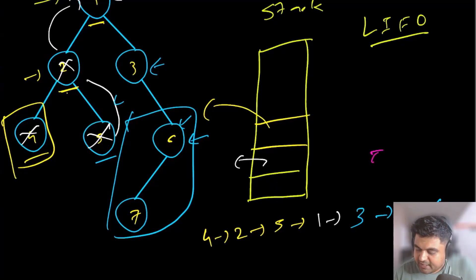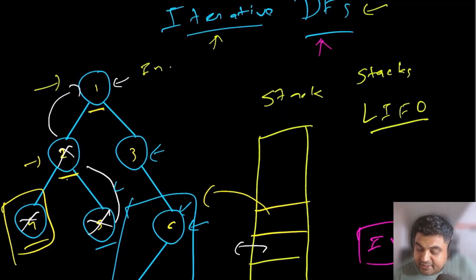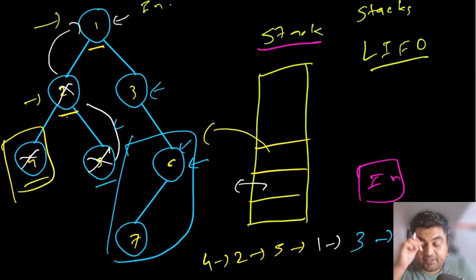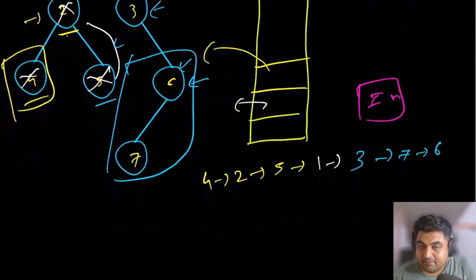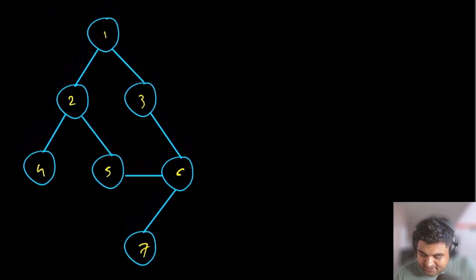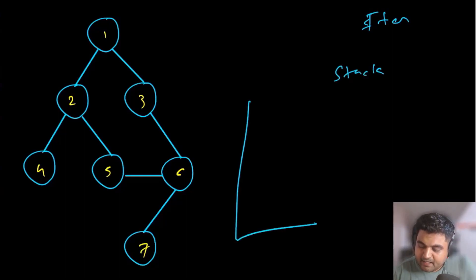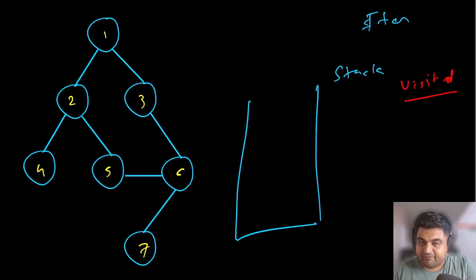This is how in-order traversal works using an iterative method for depth-first search. We are using a stack to keep track of the nodes we have already entered, and that allows us to implement our backtracking efficiently. Now let's do the same thing with a graph. This looks like a tree, but it is actually a graph because there exists a loop inside it — trees typically do not have loops, but graphs do. So let's implement our iterative method. We are going to use a stack with the last-in-first-out property, and we are also going to use a visited hash set.